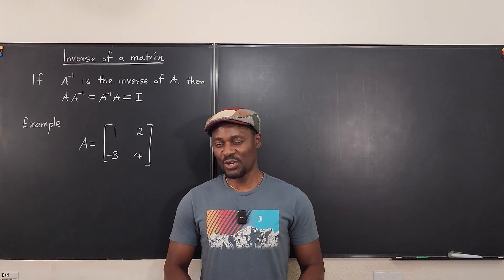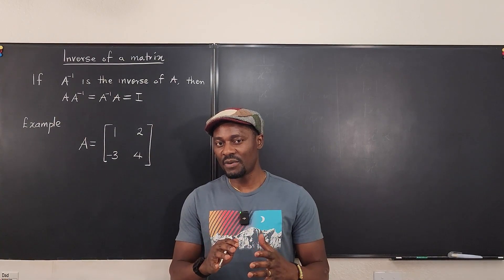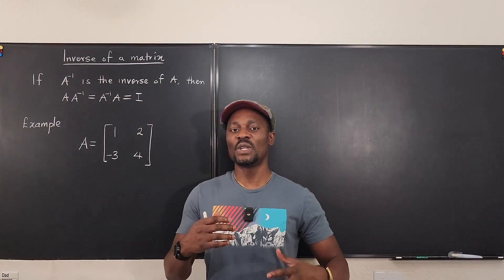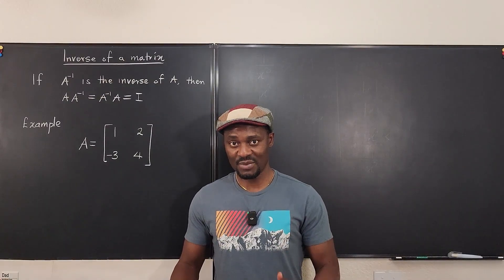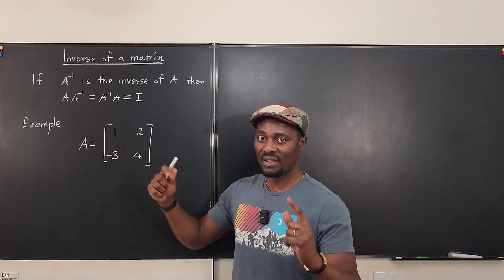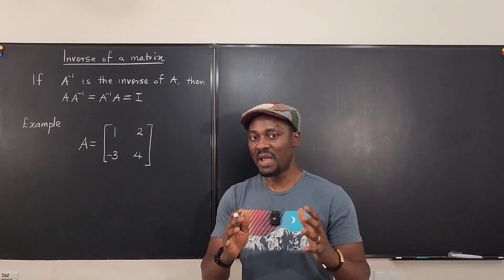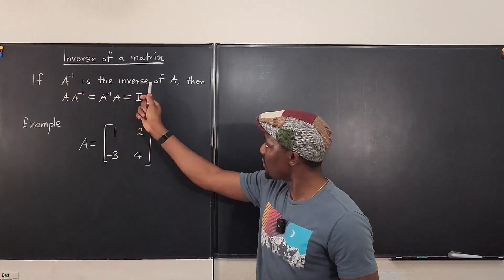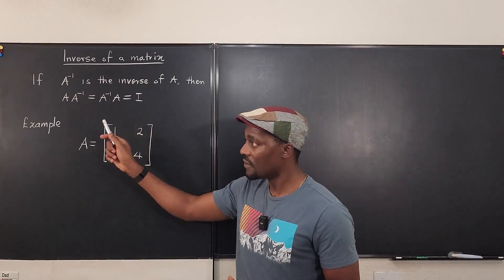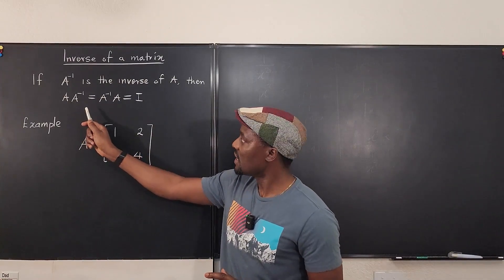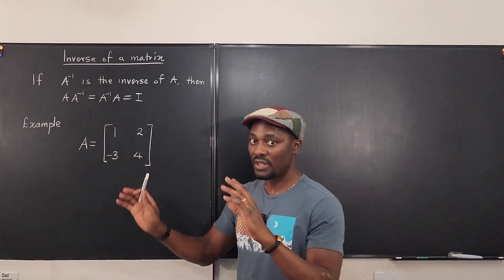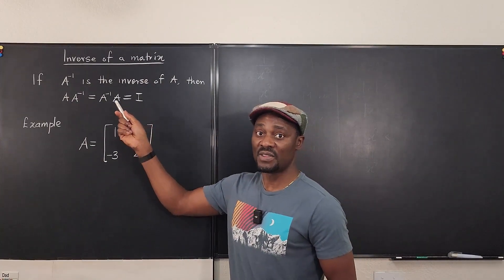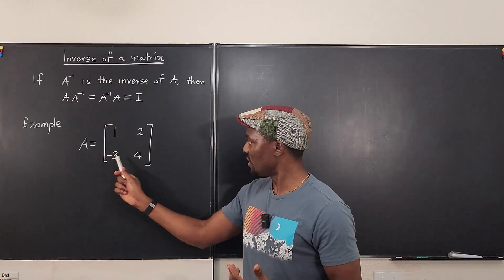Welcome to another video. We're going to be talking about the inverse of a square matrix. Only square matrices have inverses because of the commutative property in this definition. Given a matrix A, if A-inverse is the inverse of A, then the product of A and its inverse is equal to the switched version — A-inverse times A — and it equals the identity matrix for that dimension.